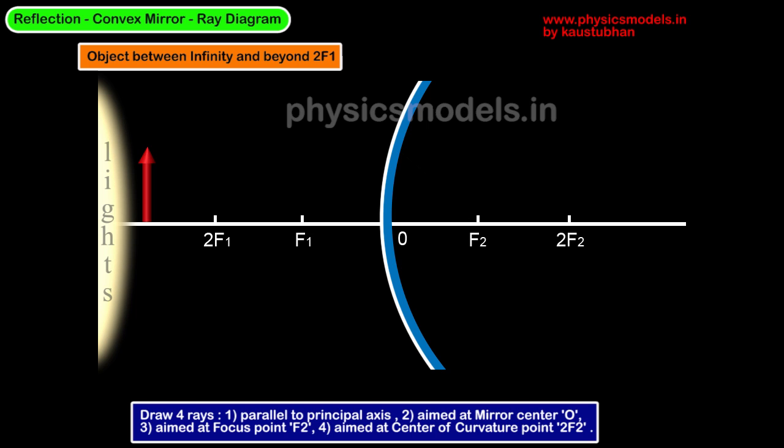We bring on the lights and place an object beyond 2F1, and now we'll draw the ray diagram. The bottom of the arrow doesn't need a ray diagram because the light will pass through the bottom of the arrow, go to the mirror and reflect back. So the image of the bottom will always lie on the principal axis, that white line.